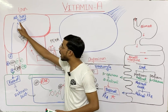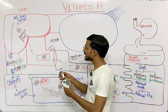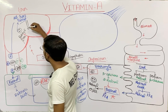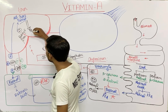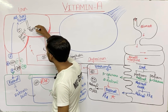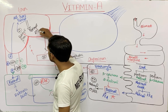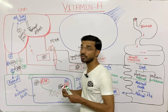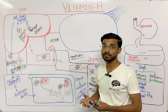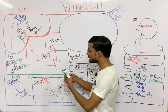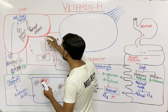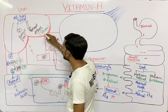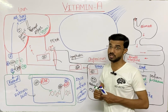The second pathway of all-trans retinol is that it can convert into retinol ester — also called retinol palmitate — which is the storage form of Vitamin A in the liver.